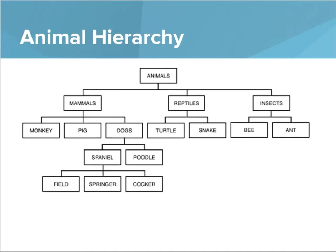We're going to start off by looking at a diagram of an animal hierarchy. You can see that there's a box for animals at the top, and then there are boxes that connect them. Mammals, reptiles, and insects come out of animals. Out of mammals you can see a monkey, a pig, and dog. On dogs there's a spaniel and a poodle. Out of reptiles there are different types. So you can see there's a relationship expressed in this hierarchy diagram showing how different animals relate to each other.